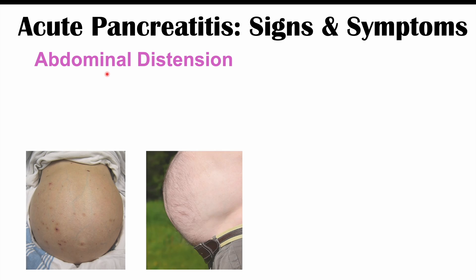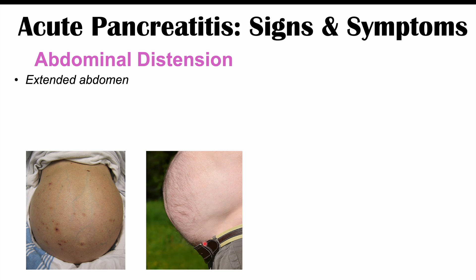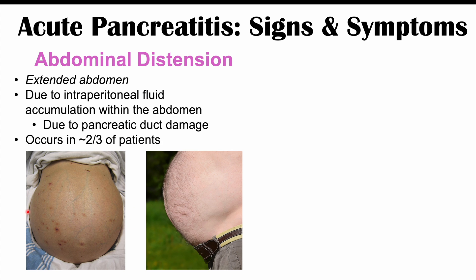Abdominal distension — an extended abdomen — can be seen in some patients. In very severe cases, this can present as pancreatic ascites due to intraperitoneal fluid accumulation from pancreatic duct damage caused by inflammation. Most of the time it will be mild, but in severe cases it can be quite pronounced. Abdominal distension occurs in roughly two-thirds of patients.